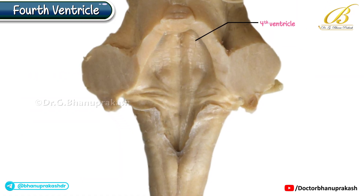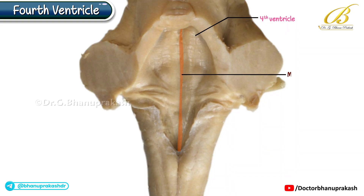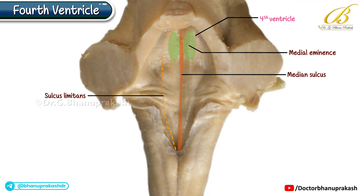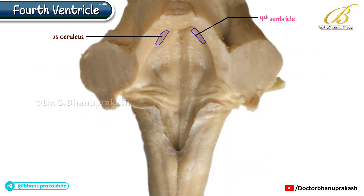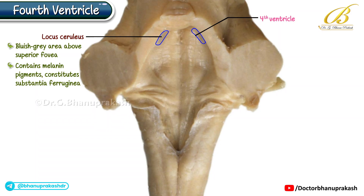Noteworthy features include the floor divided in half by the median sulcus. On each side of the sulcus, there is an elevation known as the medial eminence. The medial eminence is laterally limited by the sulcus limitans, which presents two depressions: the superior fovea above and the inferior fovea below. The locus ceruleus, a bluish-gray area above the superior fovea containing melanin pigments, constitutes the substantia ferruginea.